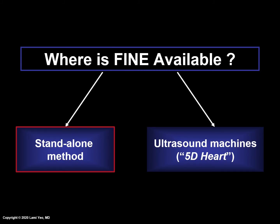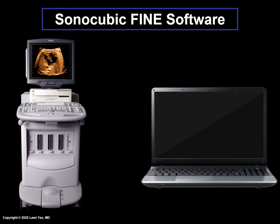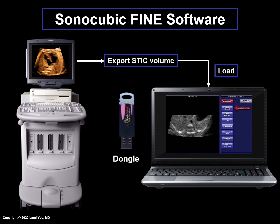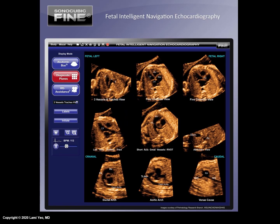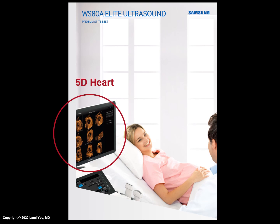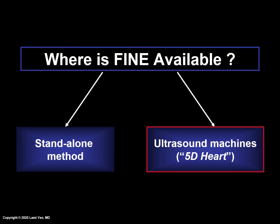Now, where is FINE available? Initially, we developed this as a stand-alone method in which an acquired STIC volume was exported and then loaded onto a computer system with FINE installed. A dongle was required to enable functionality, and the STIC volume could then be analyzed by FINE. We called this method sonocubic FINE. However, FINE was later licensed to an ultrasound company and has now been successfully integrated into several commercially available ultrasound systems worldwide. It is now known as 5D heart, and STIC volumes are obtained by the ultrasound machine and are directly analyzed by 5D heart technology on the machine.